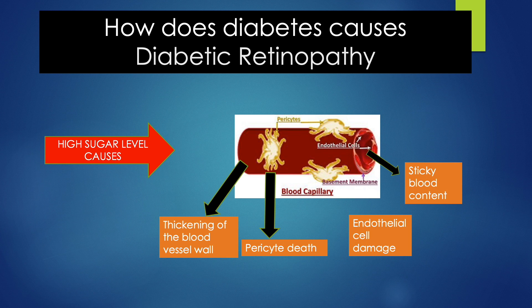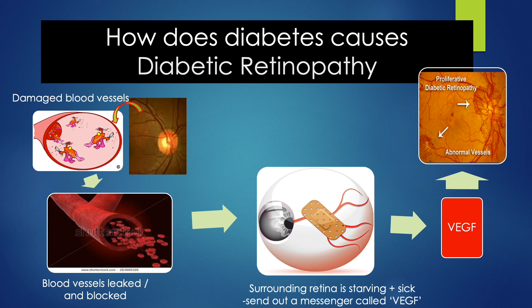How does diabetes damage the retina? High levels of sugar will cause damage to the blood vessel wall and concurrently cause increased stickiness of the blood content. This will alter the flow of blood in the vessel, which eventually disrupts the flow of oxygen in the eye.